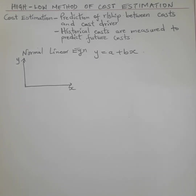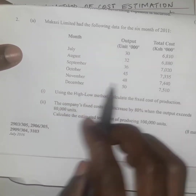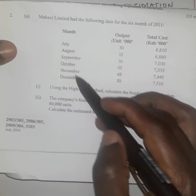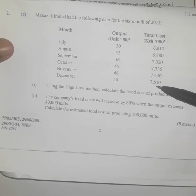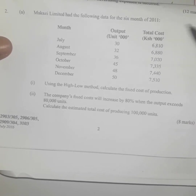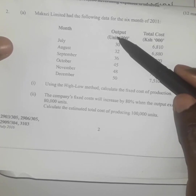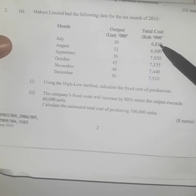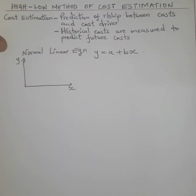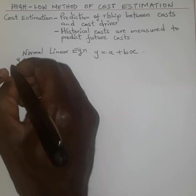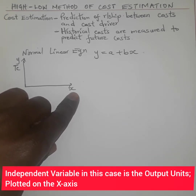From our equation, we are told that Makazi Limited had the following data for the six months of 2010 to 2011. We have months July to December, with output for every month and the total cost incurred. The cost incurred for every production level is dependent on the output. We plot the dependent variable — total cost — on the y-axis, and the independent variable — output — on the x-axis.